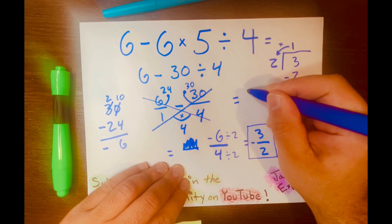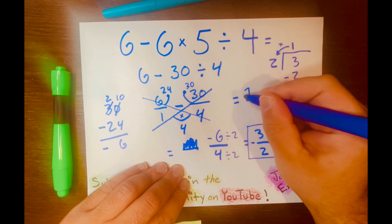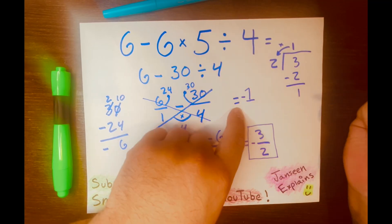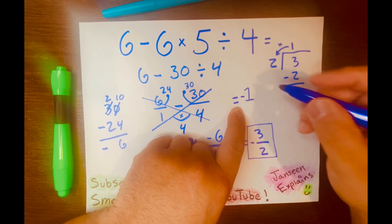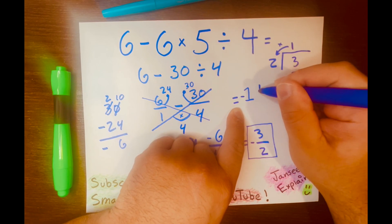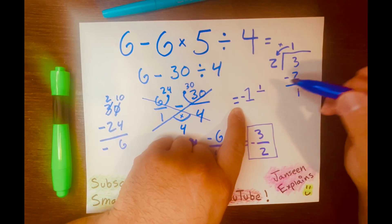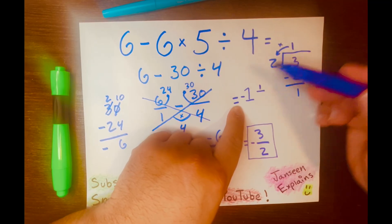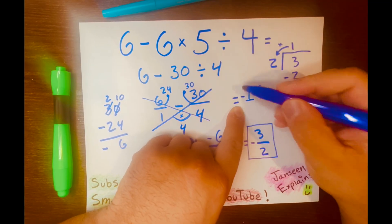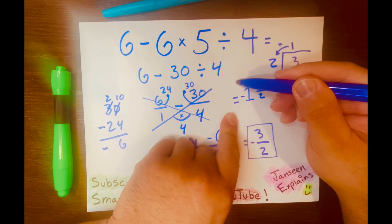So, now we can write our mixed number answer. The 1, the whole number, goes here. And we know it's a negative, right? Next, the remainder. That is our top number of the proper fraction next to the whole number, which is 1. And our 2 goes at the bottom here. So, now we have an answer of negative 1 half.